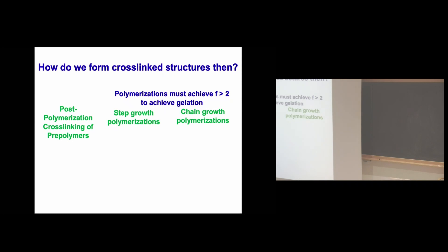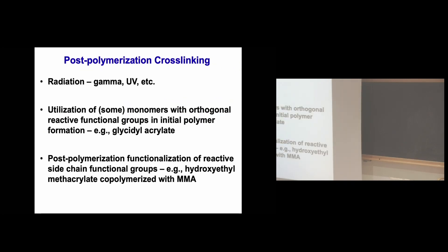We're not going to spend much time on post-polymerization crosslinking in the context of dynamic covalent chemistry, because it's the least controlled approach — the chemistry is essentially hitting something with a hammer. For step-growth and chain-growth polymerizations, we need to think about functionality greater than two. Functionality here is defined as the number of bonds a monomer forms with other monomers.